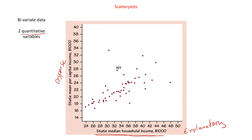It is good practice to get variables into the right place. Sometimes it could go either way; sometimes it's very obvious. Time would usually be on the explanatory axis — the x-axis — because that explains what's happening. In this case, we have the state median household income and the state mean per capita income, so we would only know which way to put it based on what the problem is trying to explain.